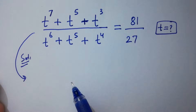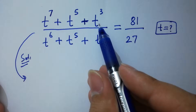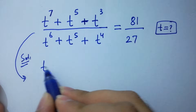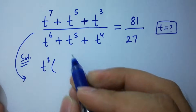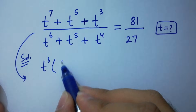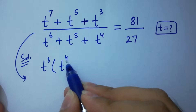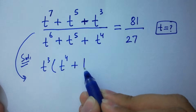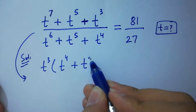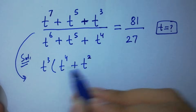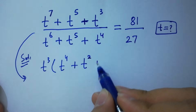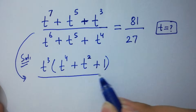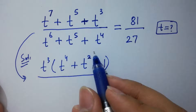To solve this, in the numerator, t cubed can be common. So we factor out t cubed, giving t to the power 4 because 4 plus 3 is 7, plus t squared because 3 plus 2 is 5, plus 1.